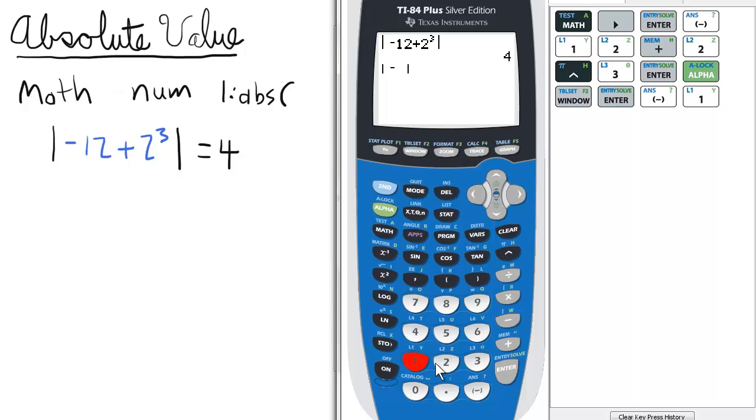We can do it again, negative 12 plus 2 raised to the third, and Enter just to show that it works using the shortcut menu.